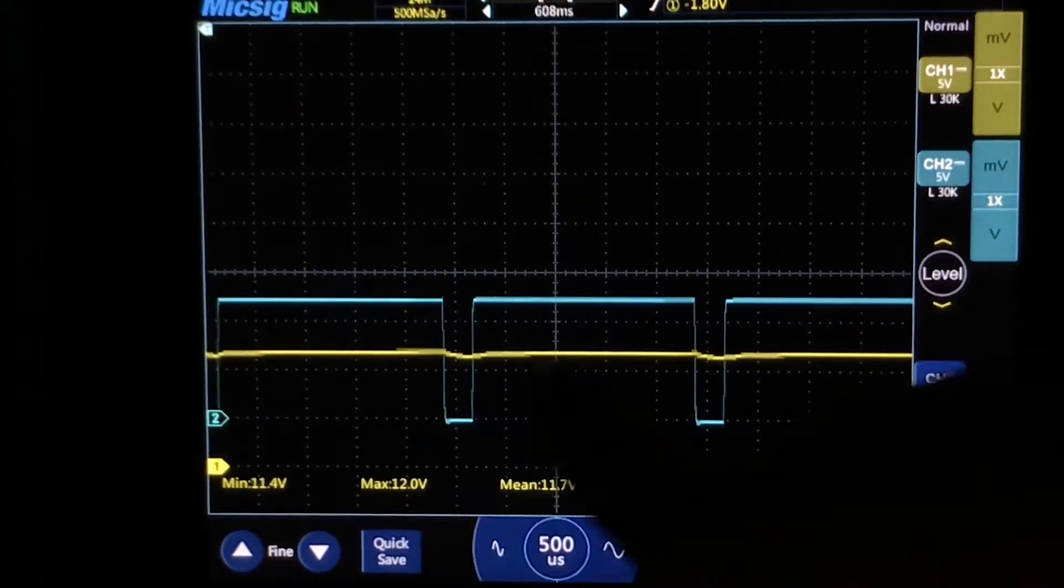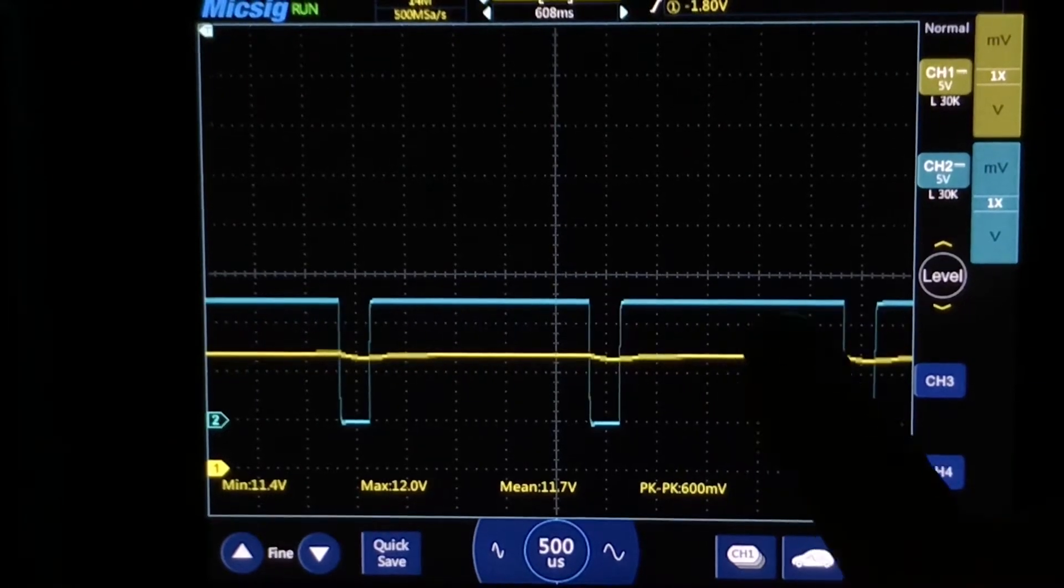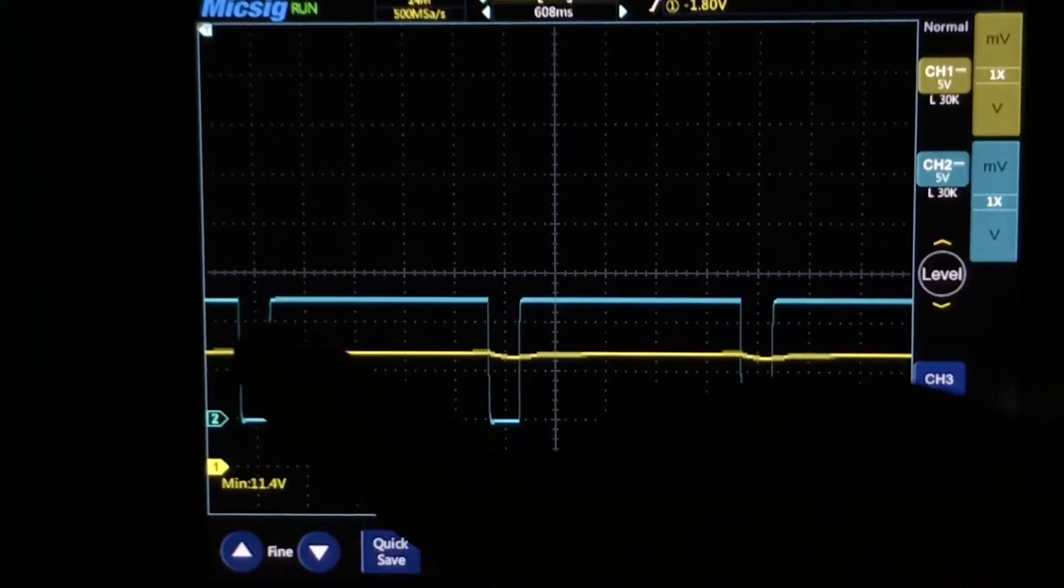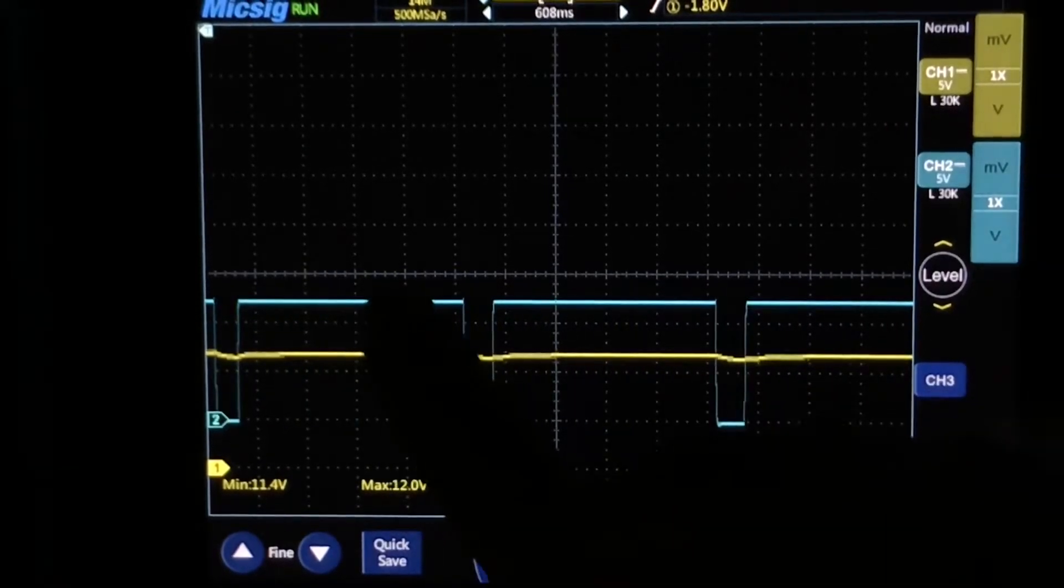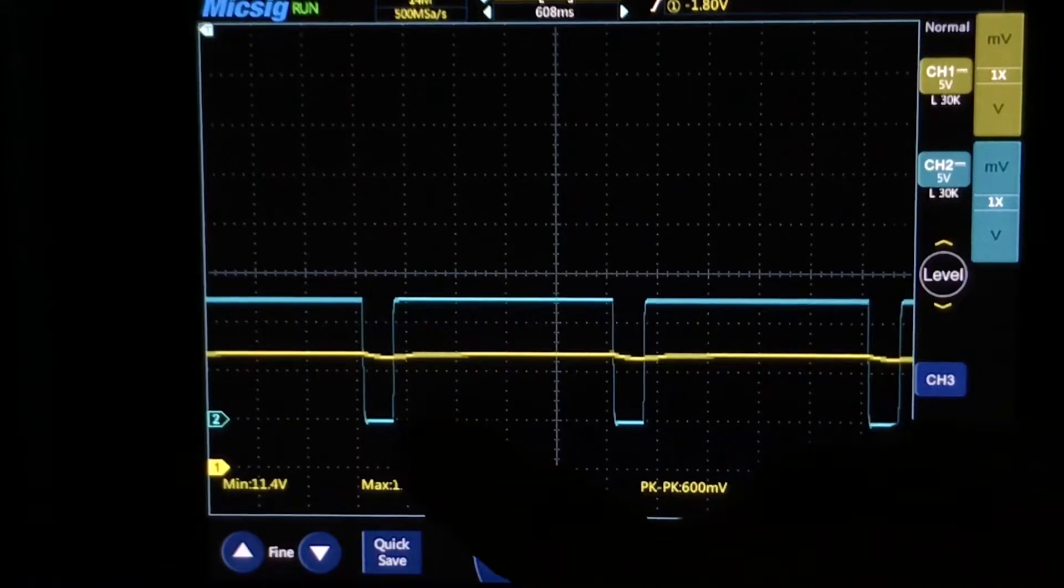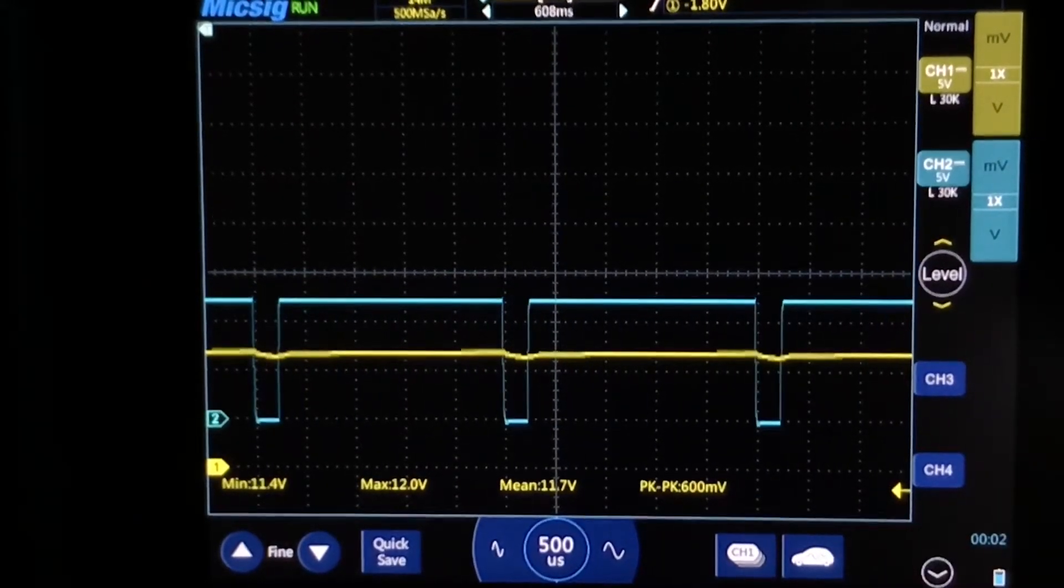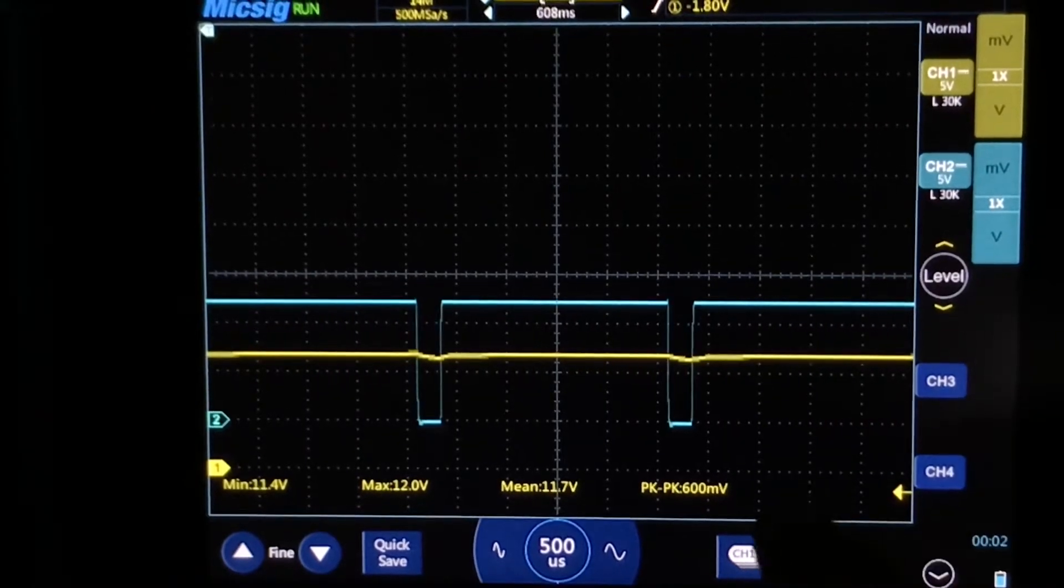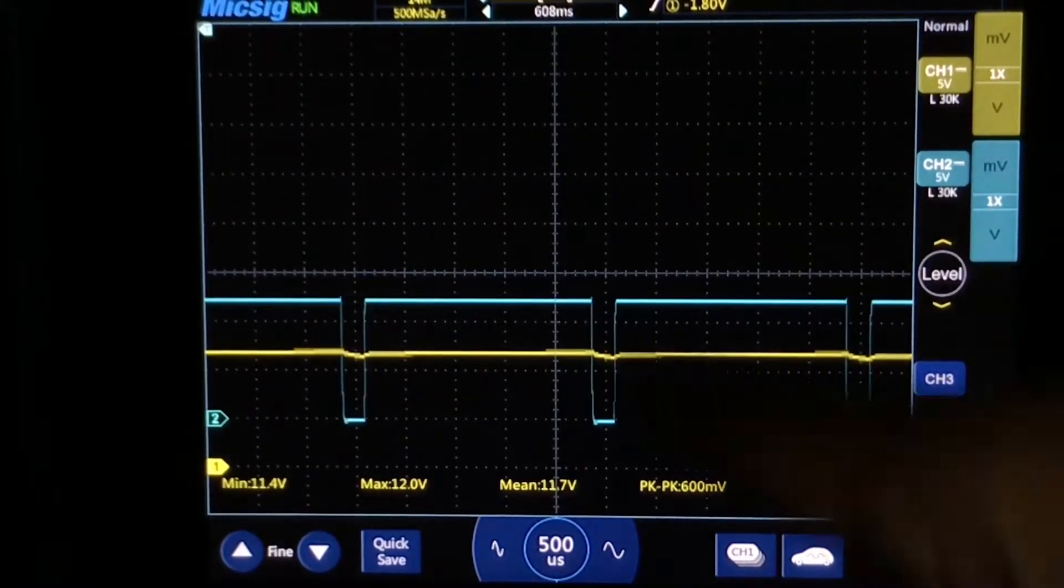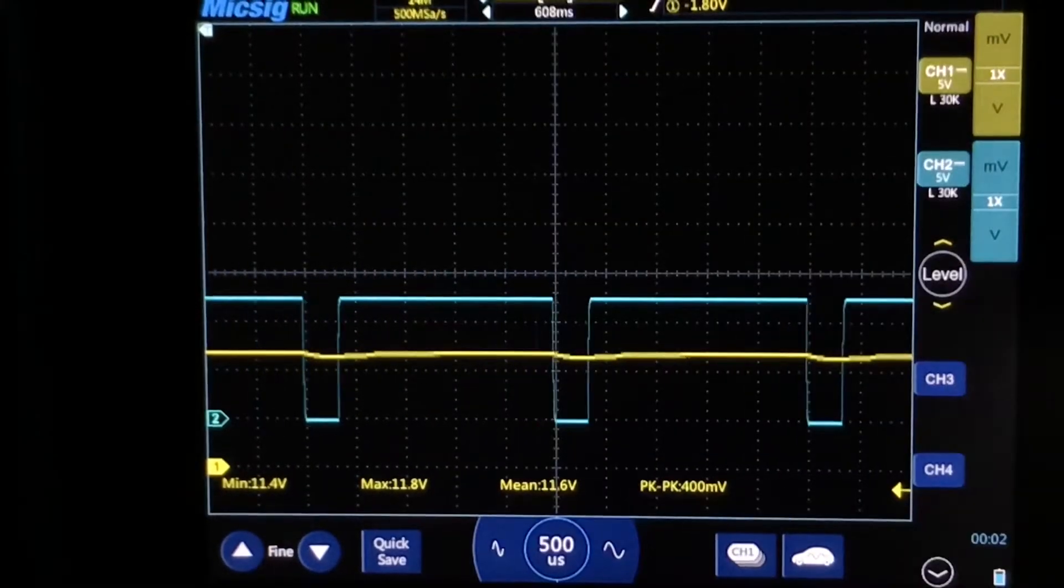So as you can see, like right now, the blue trace is at 5 volts, pretty much battery voltage, and you see it drops down to ground. So it's going on-off, on-off. Basically it's either, I'm not sure if it's a power switch, but I'm assuming it's a ground side switch circuit.